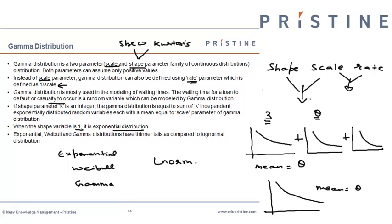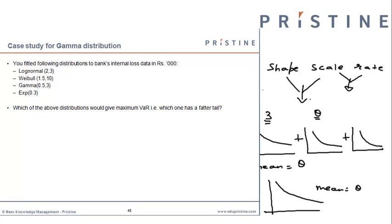Now let us look at a small caselet on gamma distribution. We have fitted four distributions to a particular dataset, and we would like to know which of the four fits will result in a higher operational VaR, assuming that the frequency distribution is the same in all four cases. If frequency is the same, then the operational VaR will be guided by the fatness of the tail of the individual severity distribution, so we just have to determine which of the four severity distributions has a fatter tail.